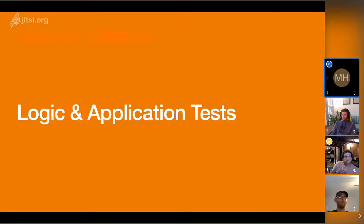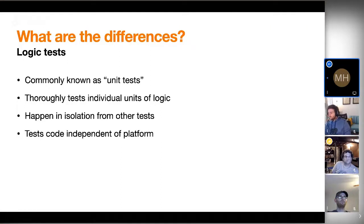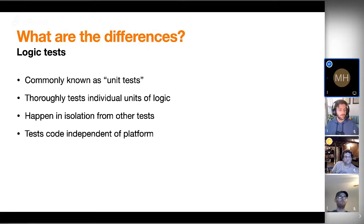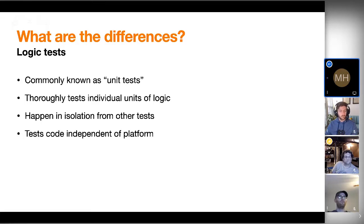Logic tests are commonly known as unit tests, and their purpose is to thoroughly test individual units of logic, such as a method on a class. In general, in my projects, for every class or struct or data structure, I have one XCTestCase subclass per structure that goes through and systematically tests all the things that it does. A lot of tests happen in isolation from other tests. It's really important that there isn't state maintained between the two tests, so that you can verify that state from previous tests isn't affecting the way the code in your current tests operates.